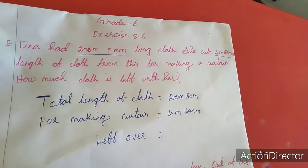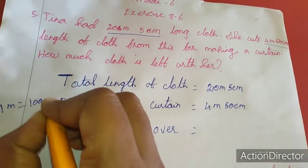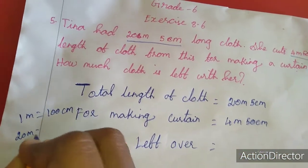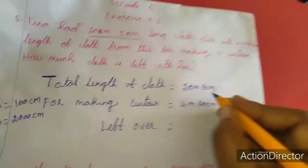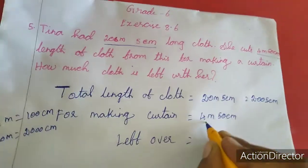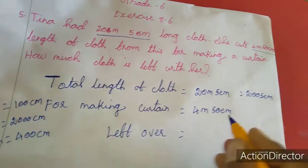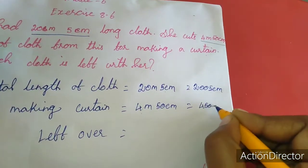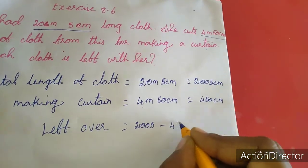Now to change to one unit, we know that one meter equals 100 centimeter. So 20 meter equals 20 into 100, which is 2000 centimeter. Adding 5 centimeter gives 2005 centimeter. For the cut piece, 4 meter equals 400 centimeter, plus 50 gives 450 centimeter. So we need to calculate 2005 minus 450 centimeter.